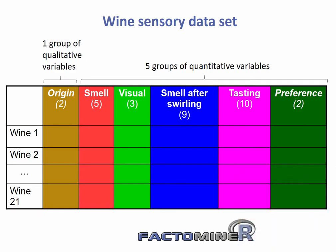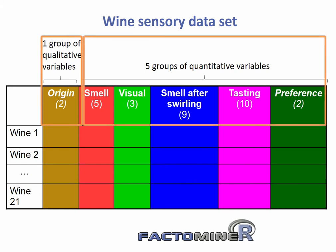We are going to use a dataset in which 21 wines were described by a panel of experts using sensory descriptors. Two qualitative variables, the origin of the wines and the soil type, were also recorded. We have therefore 21 rows of wines and 31 columns of variables: two qualitative and 29 quantitative, which can be grouped into five groups of variables.